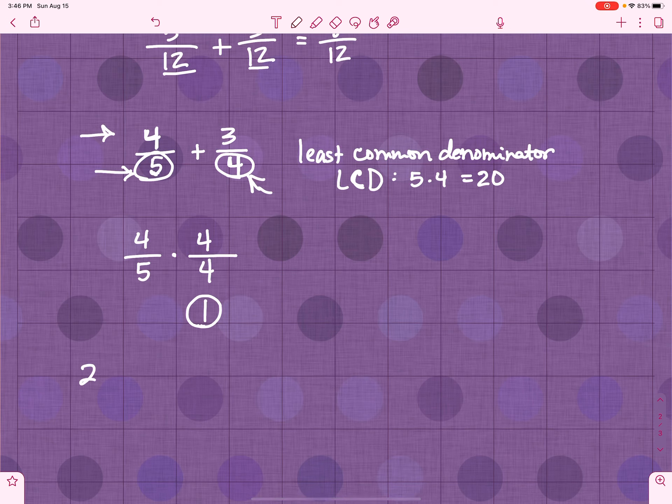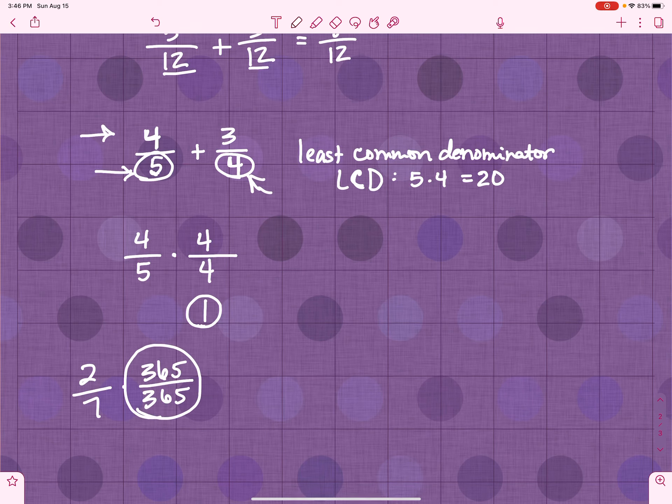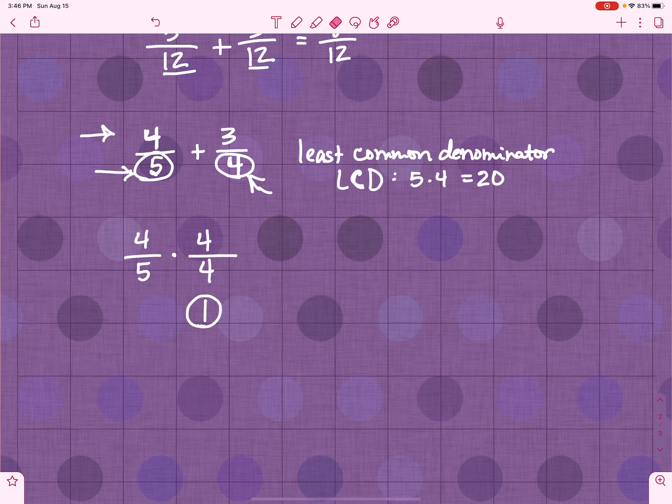Let's say I have 2 7ths. I can multiply it by 365 over 365. And it will not change the value. It will only change what it looks like. Because 365 over 365 is 1. It's very important that you understand that.